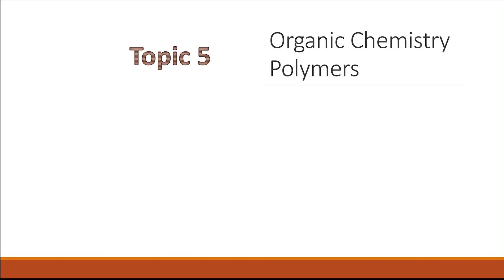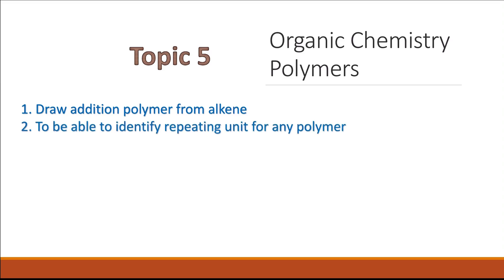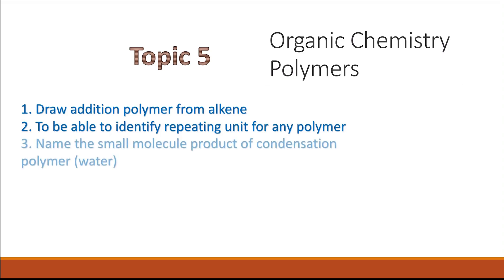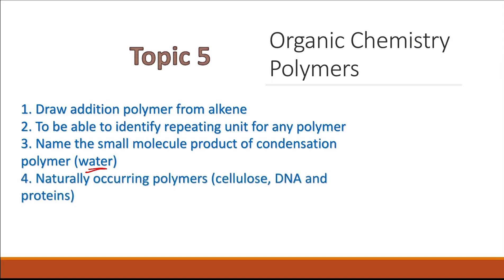Polymers in organic chemistry is almost definite to appear in the exam. Know how to draw an addition polymer from an alkene: remove the double bond, draw two new single bonds, and open the brackets with the letter n. Be able to identify the repeating unit of any polymer. Know the small molecule product of condensation polymerisation, which is usually water. Naturally occurring polymers include cellulose (monomer: sugar), DNA (monomer: nucleotide), and proteins (monomer: amino acids).